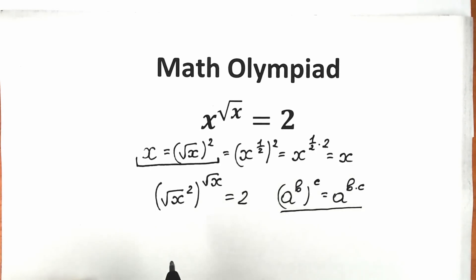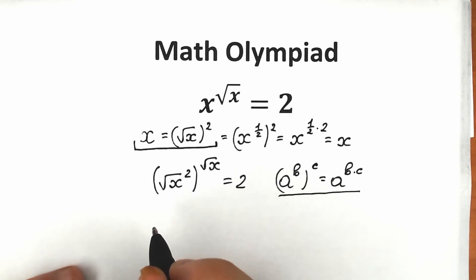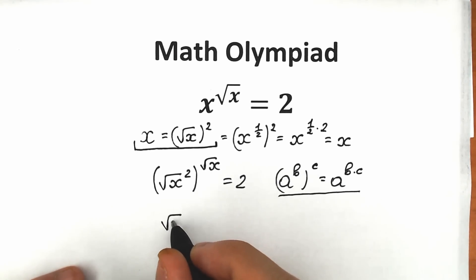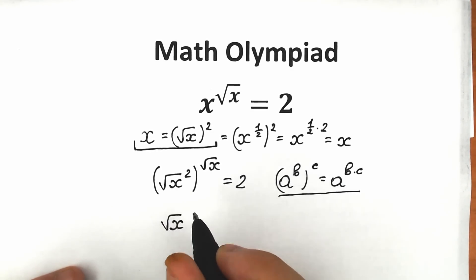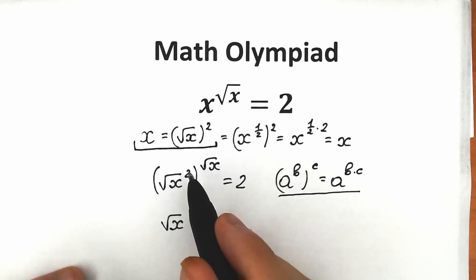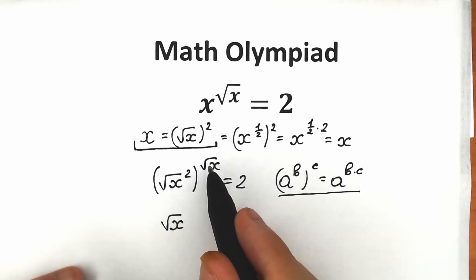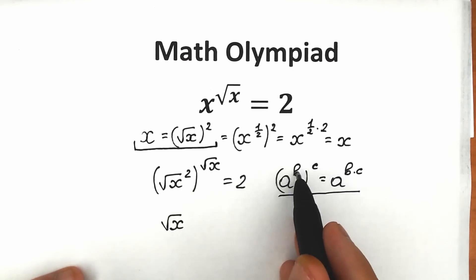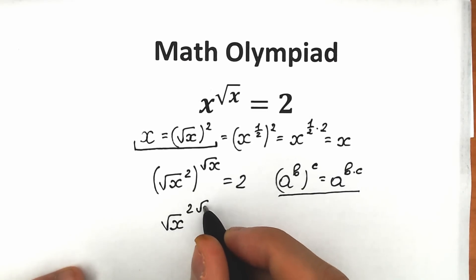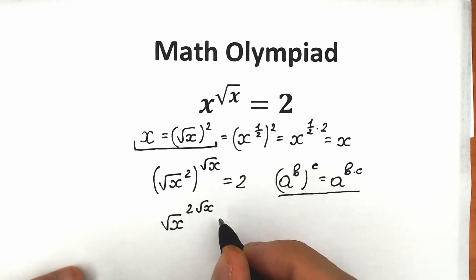Let's apply this property here. We multiply the exponents 2 and square root of x, giving us square root of x to the power 2 times square root of x, equal to 2.